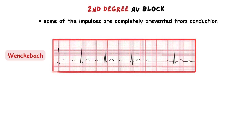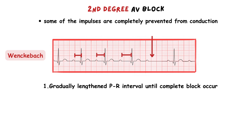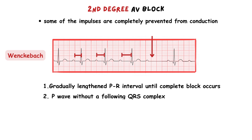Wenckebach block is presented with progressively increased duration of conduction until complete block. On ECG this is shown as a gradually lengthened PR interval until complete block occurs, leaving only a P wave without a following QRS complex. This blockage repeats in series of 2, 3, 4, 5 or more.